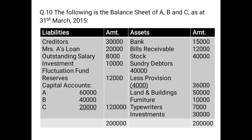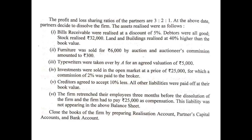So that covers the placement of assets and liabilities. The profit and loss sharing ratios of the partners are 3:2:1. At the above date, partners decided to dissolve the firm. The assets realized were as follows. Bills receivable were realized at a discount of 5% — so deduct 5% from the bills receivable amount and the remaining amount was realized. This will be shown on the credit side: by bank (bills receivable realized) and the amount.